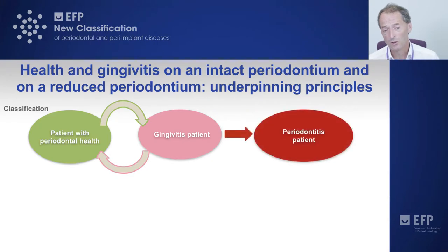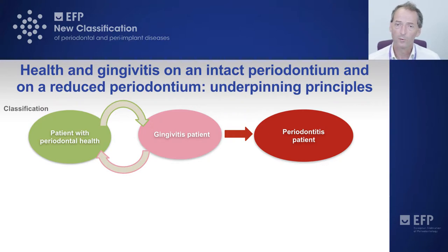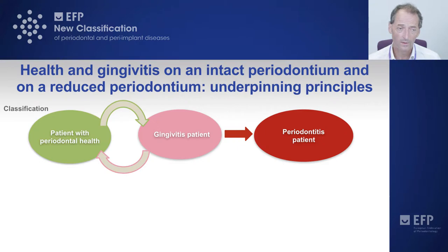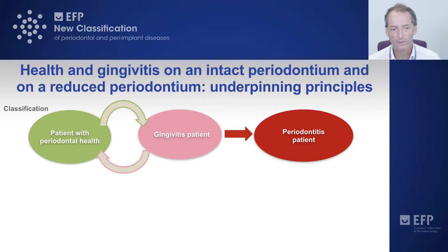In at-risk patients, gingival inflammation may progress to periodontitis. There was general agreement that in the case of periodontitis, the arrow only goes in one direction. Once bony attachment has been lost it cannot generally be replaced, and therefore that periodontitis patient is classified as a periodontitis patient for life. It doesn't mean they can't have a healthy clinical situation, but their risk is much higher than someone who has never had periodontitis. The basic classification is simple: health, gingivitis, or periodontitis.